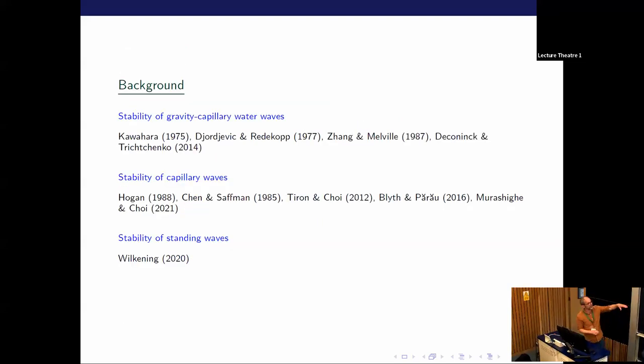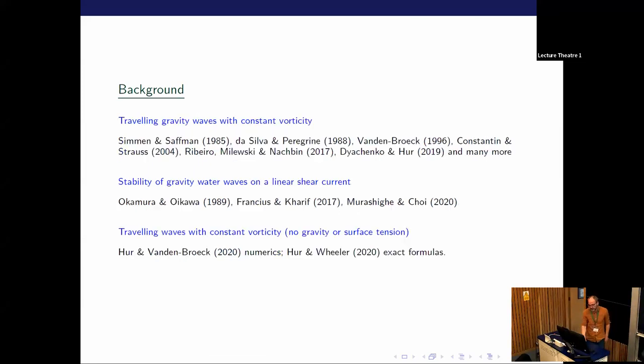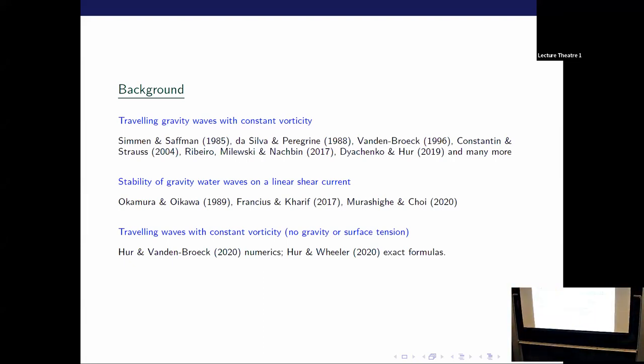So you need a collision to occur and you may or may not get instability off. That's pure gravity waves. And then gravity-capillary waves, stability of capillary waves and standing waves as well. The main subject of this talk and Darren's is to include vorticity, in particular constant vorticity. So the idea here is you're modeling some kind of shear current. I should pick out Jean-Marc's contributions in 96 that Darren talked about, and then Hur and Wheeler in 2020, which is very much what I want to say.